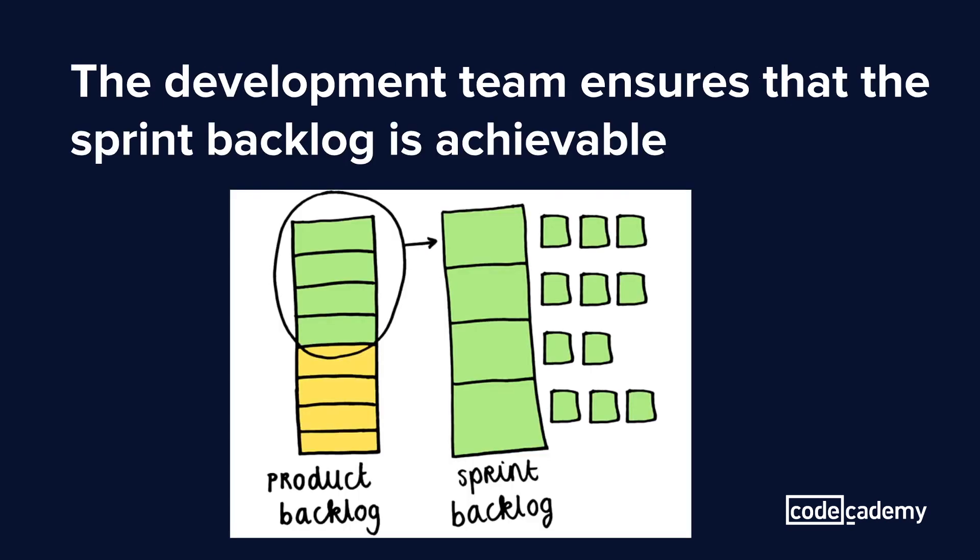The product owner determines the priority of the business needs and maintains this product backlog, which contains all the requests that aim to deliver value to clients. The product owner will move tasks from the product backlog into the sprint backlog, which is a list of tasks that the team is committed to completing in the duration of the sprint. Meanwhile, the developers will bring the technical perspective and make sure that the sprint goals can be completed.